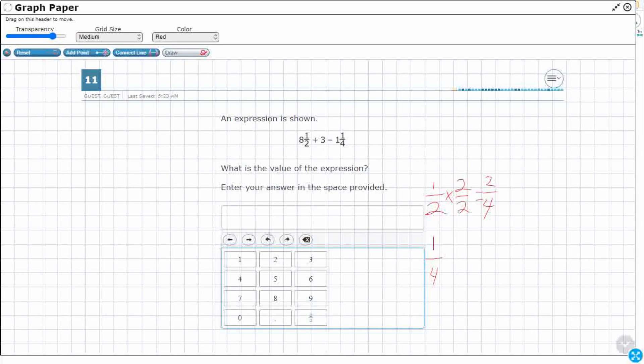So I'm going to rewrite this one. I've got my eight and a half, but I'm going to rewrite that as eight and two fourths. And then I need to add three. So I'm going to add three and I'm going to subtract one and one fourth. All right, so that's my rewritten problem here.